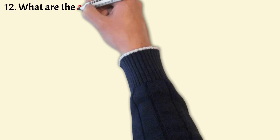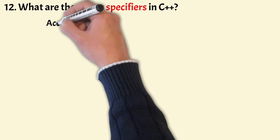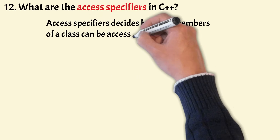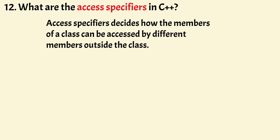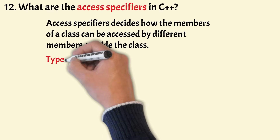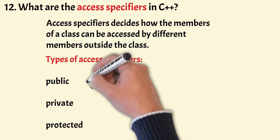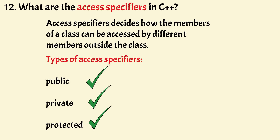Now let us understand what are the access specifiers in C++. Access specifiers decide how the members of a class can be accessed by different members outside the class. In C++, there are three types of access specifiers: public, private, and protected. Public: members declared as public can be accessed from outside the class. Private: members declared as private can only be accessed by member functions in the same class. Protected: members declared as protected cannot be accessed from outside the class; however, they can be accessed in inherited classes.